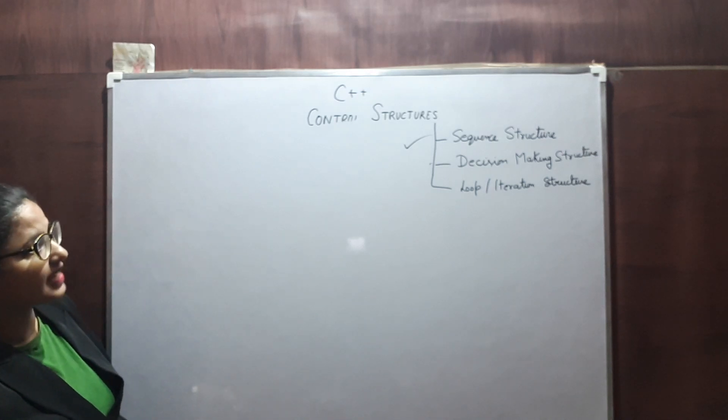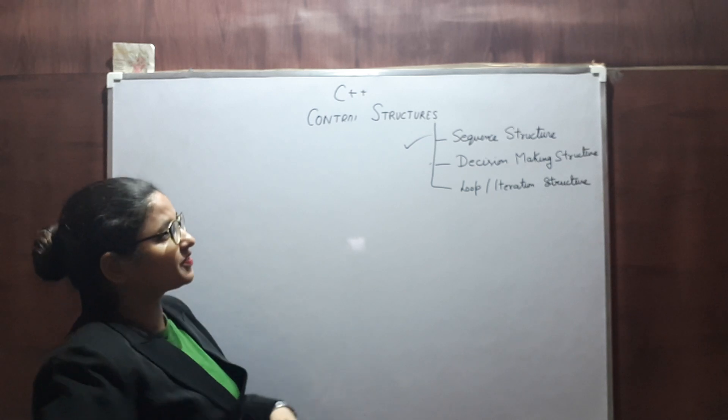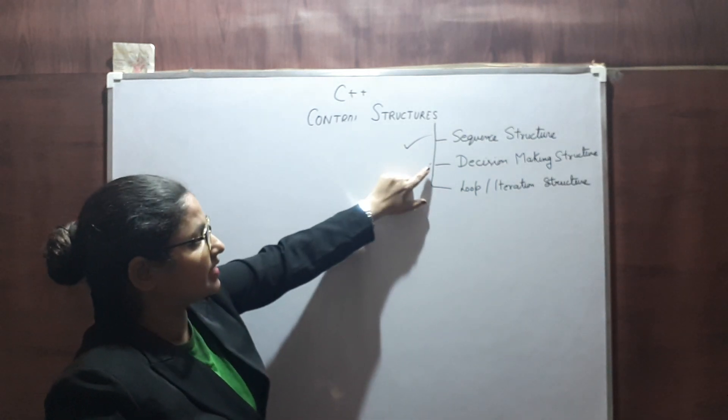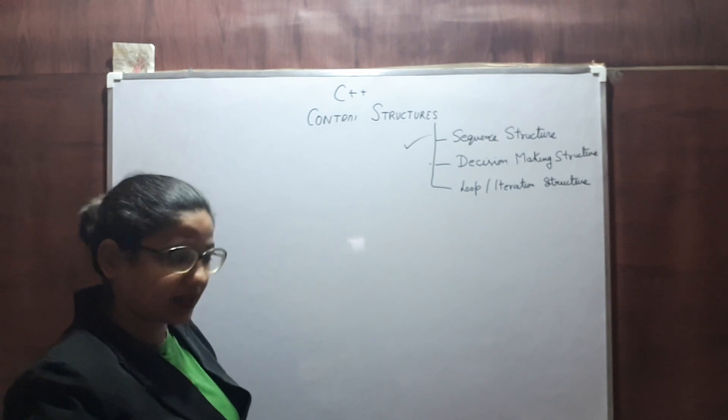Good morning guys. Let's see control structures in C++. Most of the time we use sequence, decision making, and loop or iteration structure in C++ programs.